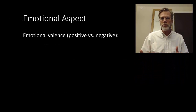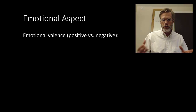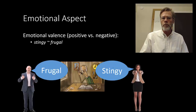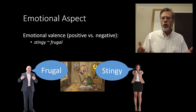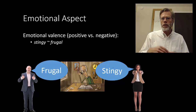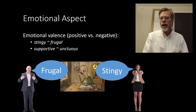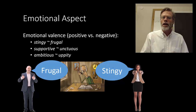We'll begin by looking at the emotional aspect in more detail. I want to focus on the valence — whether it's positive or negative. For example, we have pairs like 'stingy' and 'frugal,' where 'stingy' is negative and 'frugal' is positive, but in both cases it describes a person who does not spend their money freely. In terms of informational value, they mean the same thing, but their emotional value makes them two different words. Other pairs like that would be 'supportive' and 'unctuous,' or 'ambitious' which is positive, and 'uppity,' which is negative.